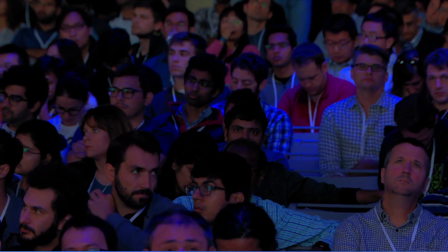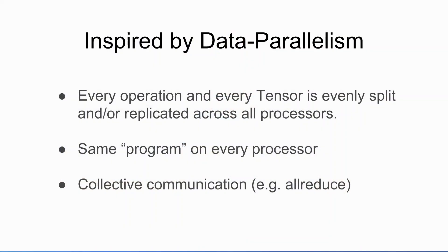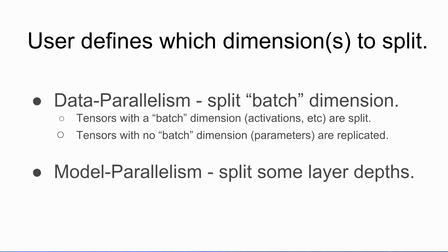So we're writing this new language called Mesh TensorFlow — it's implemented, you can use it. It's inspired by what works well with data parallelism, in that every operation and every tensor is going to be split across all processors — either replicated or split. You're running the same program on every processor, a SIMD kind of programming, and it uses collective communication like all-reduce. In data parallelism, you're splitting the batch dimension, so any tensor that has a batch dimension (activations) gets split across all processors, and a tensor without a batch dimension (weights) is replicated. With model parallelism, you do something similar but split other dimensions — instead of splitting the batch dimension, you may be splitting the depths of hidden layers.